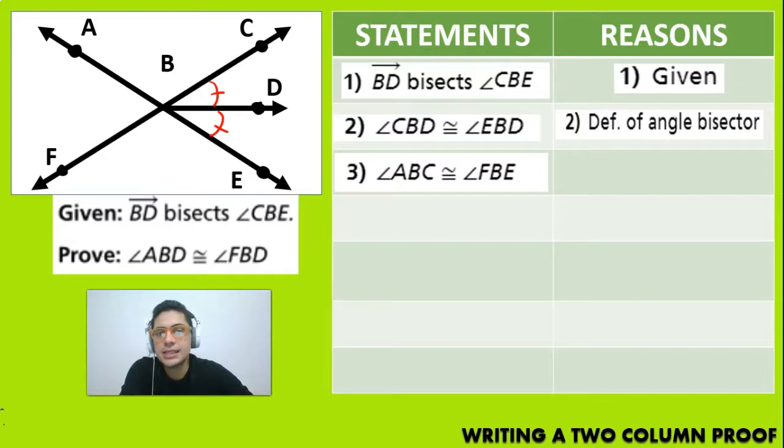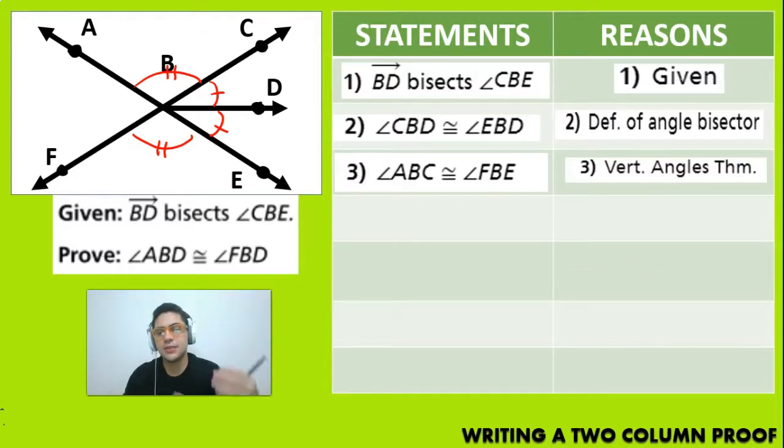Now, another thing is that you have the angle ABC and you have the angle FBE, which are these two, which I'm going to put two tick marks on. And you basically know that they are the same because of the vertical angles theorem. So because they are on opposite sides of the same vertex, you know that they are going to be congruent.